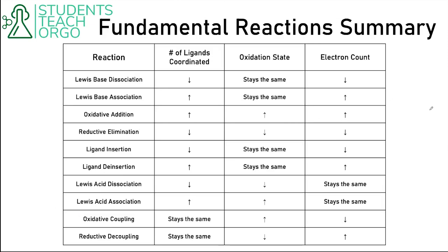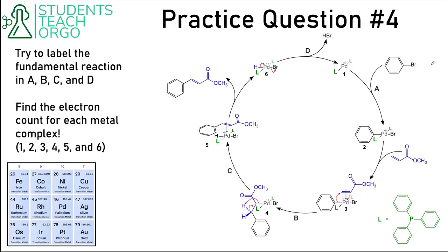This is a summary table that encompasses all of the criteria changes we've been talking about for those reactions — all ten reactions, not including transmetallation. Each box gives a brief summary of how each criterion changes. For example, for Lewis-base dissociation, the number of coordinated ligands goes down. We also have a practice question here: this is the Heck reaction, which we'll talk about more in the next video, and we're using it to help us recognize these fundamental reactions and to practice electron counting. If you'd like to review electron counting, feel free to watch the last video on the introduction to organometallic chemistry.